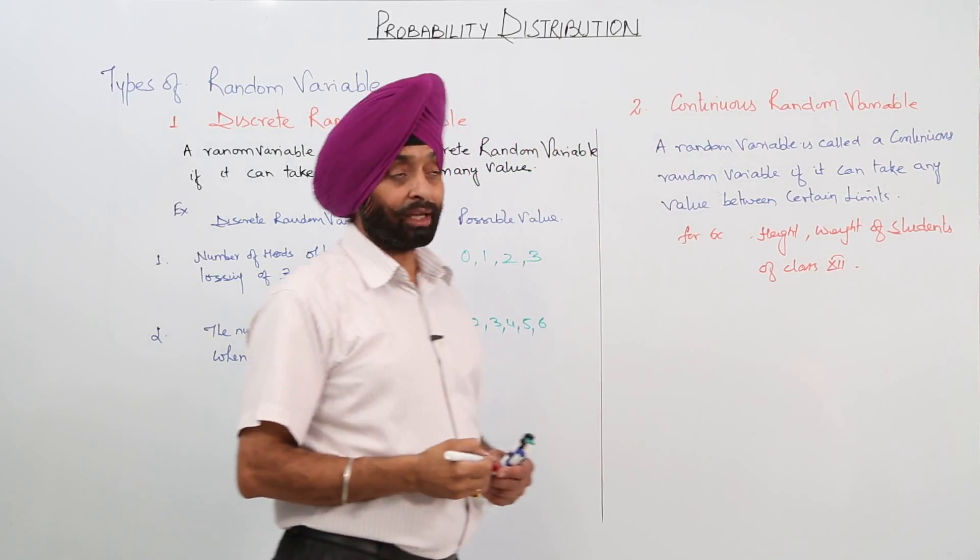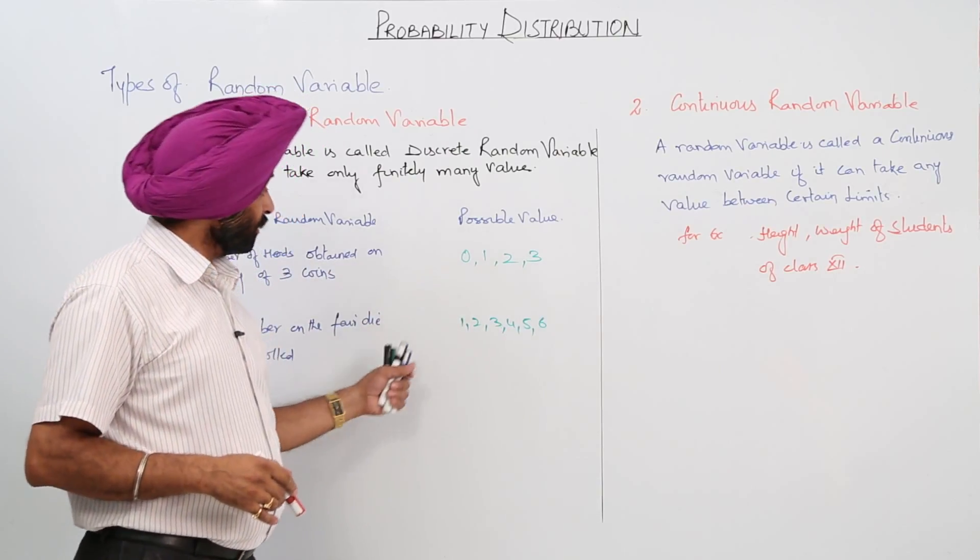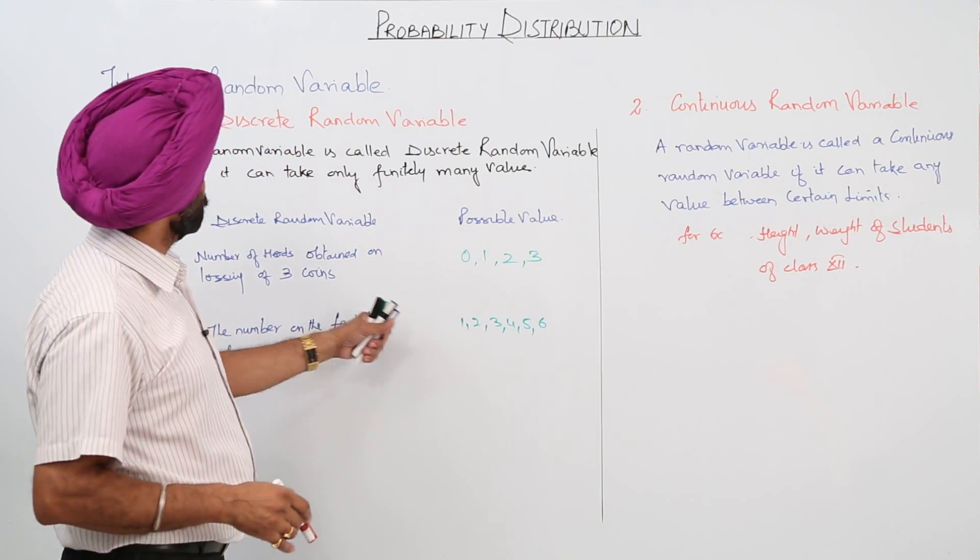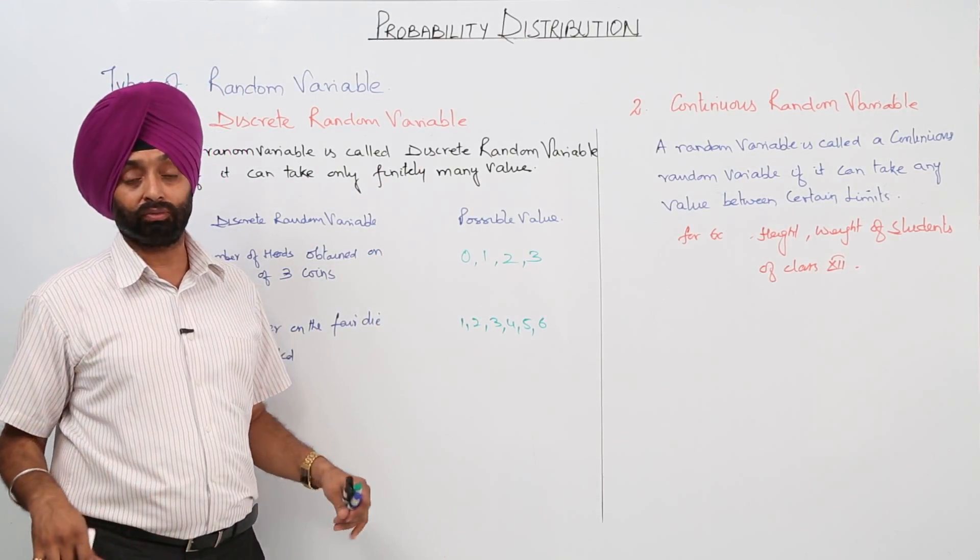So this can be a continuous random variable. This cannot be a discrete one. Here we are having some possible values, so that's why this is a discrete one. So these were the two types of random variables.